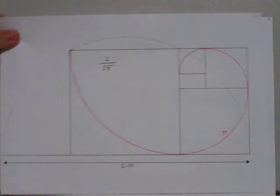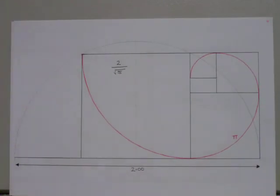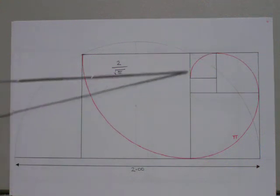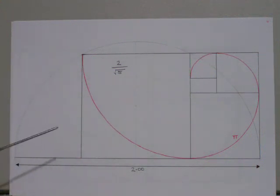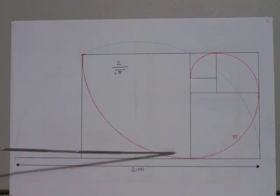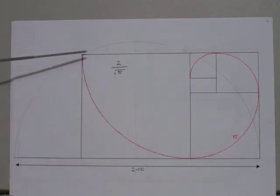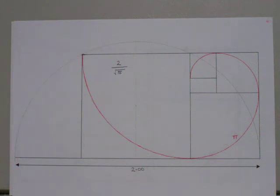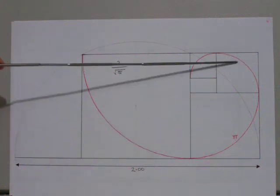The next one is a Fibonacci spiral which is four sections long — 1, 2, 3, 4. This largest square here has the dimensions of 2 divided by the square root of 5. That's a Fibonacci sequence to the length of pi, four sections long.